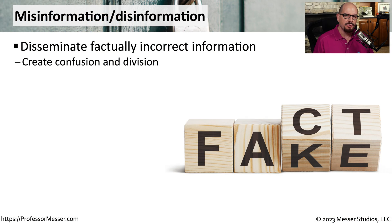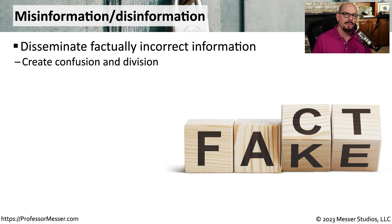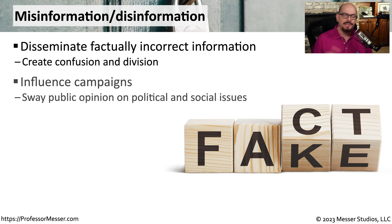One very effective social engineering technique is to disseminate incorrect information to others. Unlike something that's a difference of opinion, misinformation and disinformation contains factually incorrect details, and it's usually designed to divide or confuse different groups of people. We see this often online with influence campaigns.